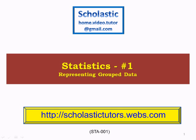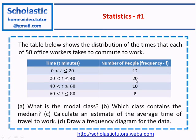Hello, here we are going to look at some basics of statistics, representing group data. The question here is: the table below shows the distribution of the times that each of 50 office workers takes to commute to work.